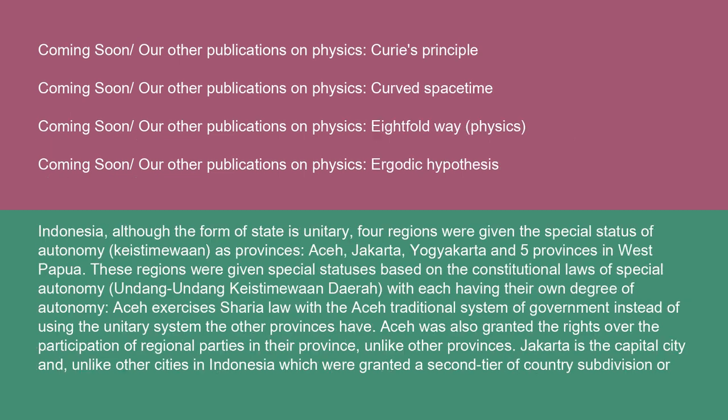Indonesia: although the form of state is unitary, four regions were given the special status of autonomy as provinces — Aceh, Jakarta, Yogyakarta, and five provinces in West Papua. These regions were given special statuses based on constitutional laws of special autonomy, with each having their own degree of autonomy. Aceh exercises Sharia law with the Aceh traditional system of government instead of the unitary system the other provinces have. Aceh was also granted rights over the participation of regional parties in their province, unlike other provinces.